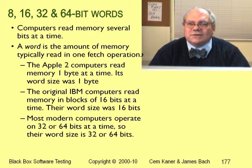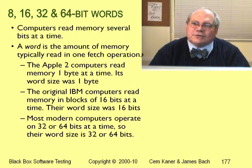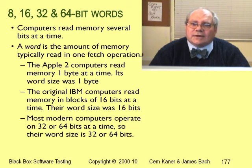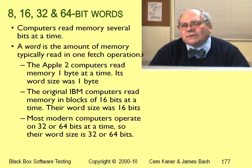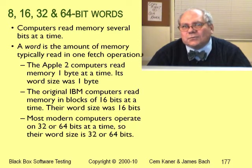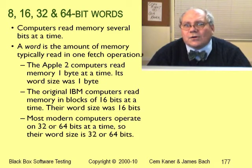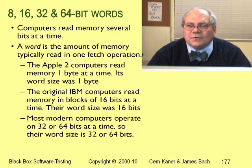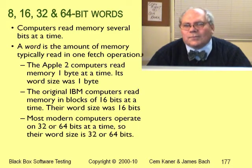I've mentioned word size a few times. The central processor fetches data from memory in chunks. Older processors typically fetched 8-bits or 12-bits at a time; newer processors typically fetch 32 or 64-bits at a time. Whatever is the natural working size for a computer — 8, 12, 32, 64, whatever — that's what we call its word size. If a computer typically operates on 64-bits of memory at a time, it's a 64-bit computer with 64-bit word size.